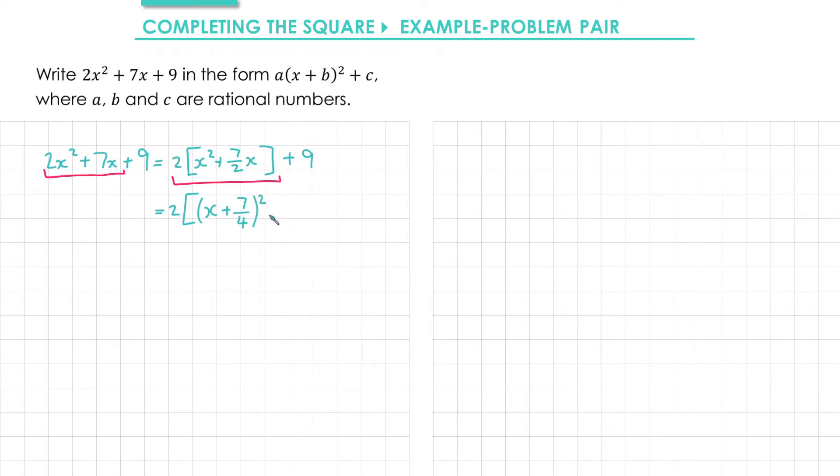If I square 7 over 4 that gives me 49 over 16. So that's the part that we subtract. Notice this time I'm not going to write this 9 as out of 16 and you'll see why on the next line.